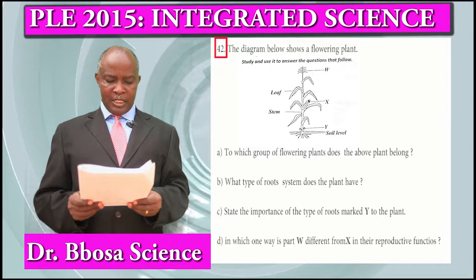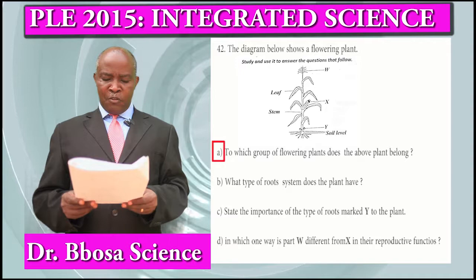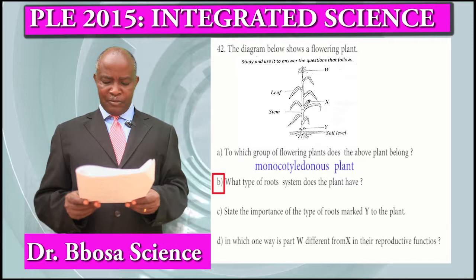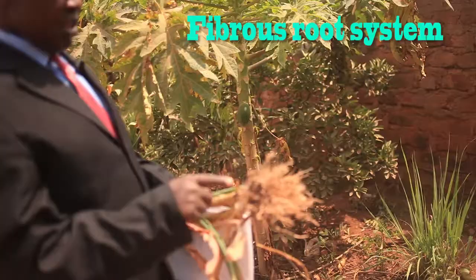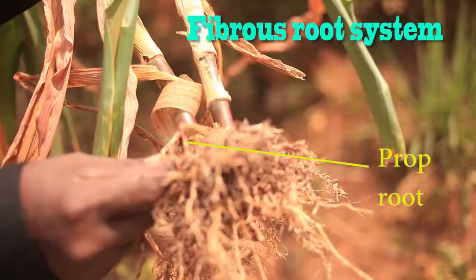Question 42: The diagram below shows a flowering plant. To which group of flowering plants does the plant belong? Monocotyledonous plants. What type of root system does the plant have? Fibrous root system. In the fibrous root system, all roots are of the same size.